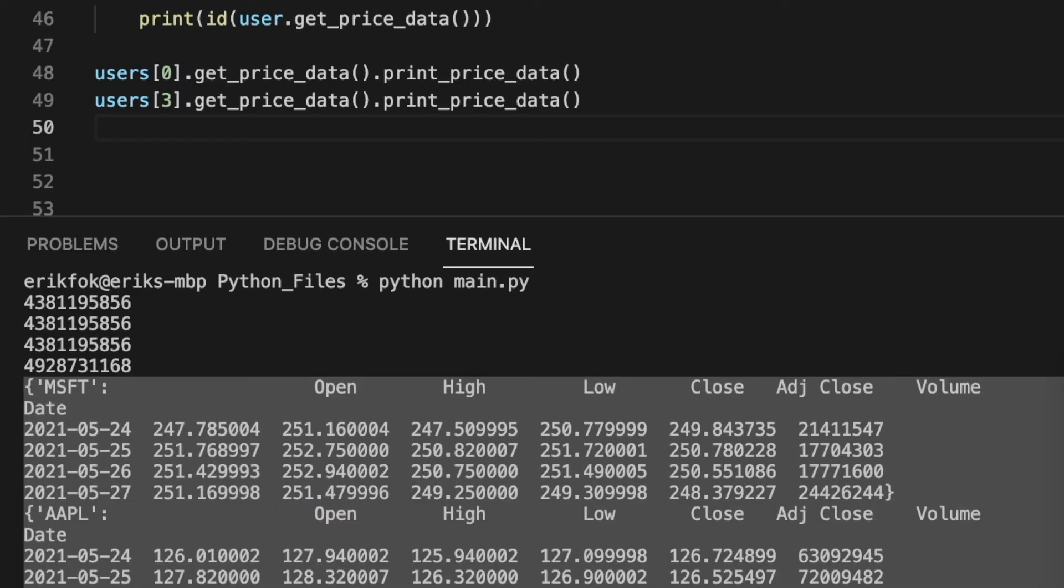Down here at the bottom, we're printing both the first user and the last user's price data. We can see that the first user's price data remains unaffected, whereas the last user now shows Apple data.